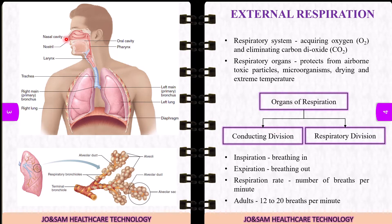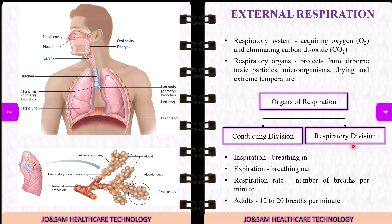The conducting division includes: nostril, nasal cavity, pharynx, larynx, trachea, bronchus, and some parts of the bronchioles. In the respiratory division, gas exchange occurs. The organs are: respiratory bronchioles, alveolar ducts, and alveoli.